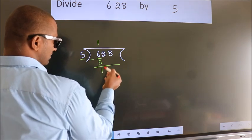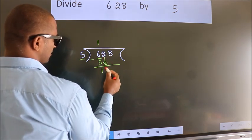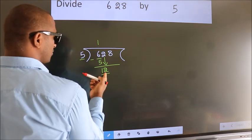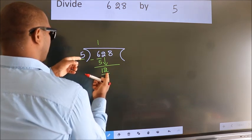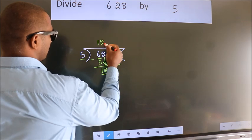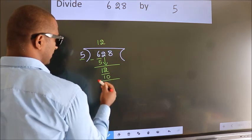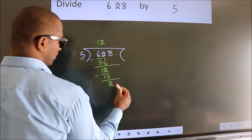After this, bring down the beside number. So, 2 down. So, 12. A number close to 12 in 5 table is 5 2s 10. Now, we subtract. We get 2.